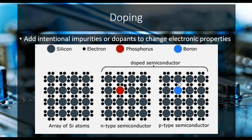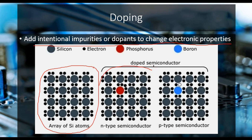Doping is nothing but adding intentional impurities or dopants to change electronic properties. In this image you can see a silicon atom. This is an n-type semiconductor, whereas this is a p-type semiconductor. N-type denotes that this semiconductor is having extra electrons.